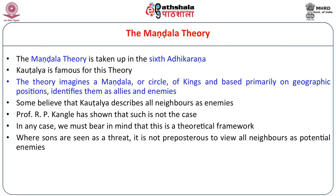But consider this: Kautaliya knew that the king's own son could be the king's enemy. If the son himself is not trusted, will the neighbor be trusted? The neighbor has all incentive to harm the king, so it is not a surprise that generally he describes neighbors as enemies. This is what we call paranoia — very common among leaders. Leaders are supposed to always be on guard.